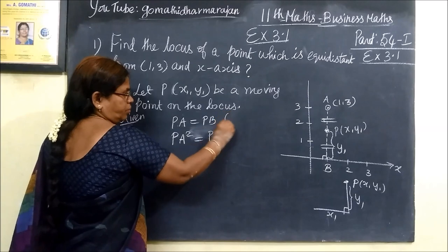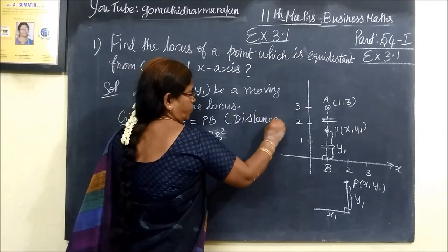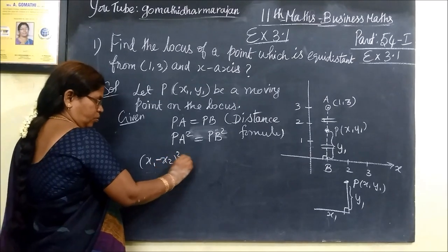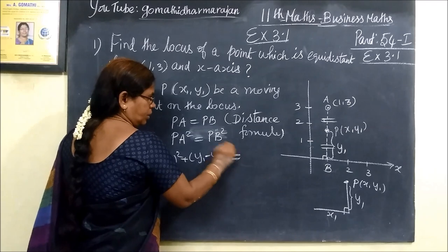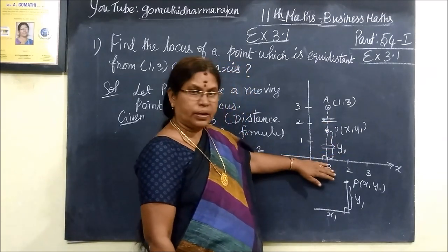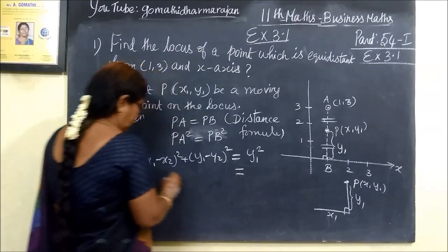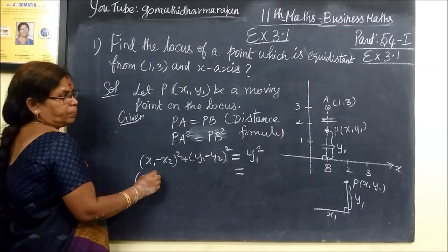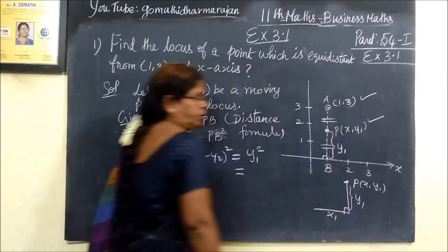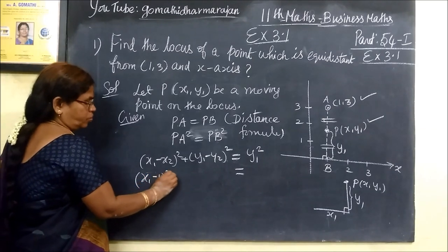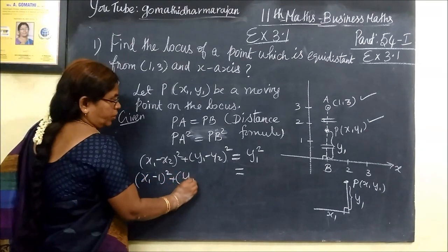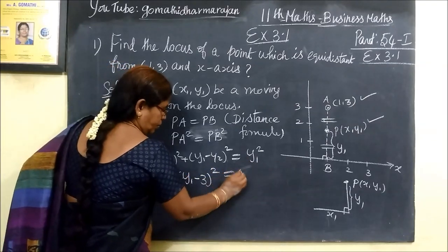PA square equals PB square. We are going to use the distance formula. (x1 - x2) whole square, (y1 - y2) whole square equals PB. It is y1. Vertical distance is y1. So PA equals PB. PB is the solution. So x1 minus 1 whole square, then y1 minus 3 whole square equals y1 square.